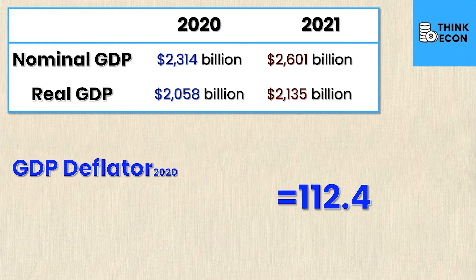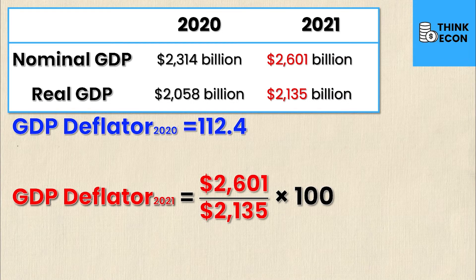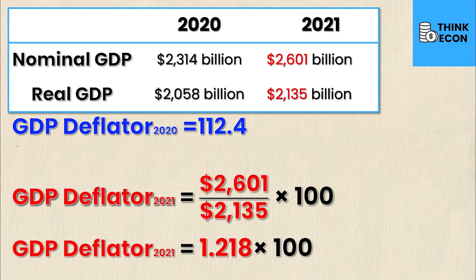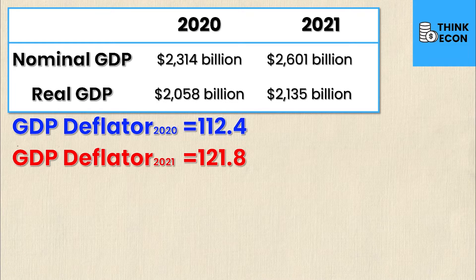Let's note that value and calculate the GDP deflator for 2021. It's important to note that GDP deflator values are index numbers — ordinal numbers — so to compare them or calculate the change in price level you need multiple GDP deflator values. Subbing in the nominal and real GDP for 2021 we get 2601 divided by 2135 times 100, which simplifies to 1.218, or 121.8 — the GDP deflator for 2021.